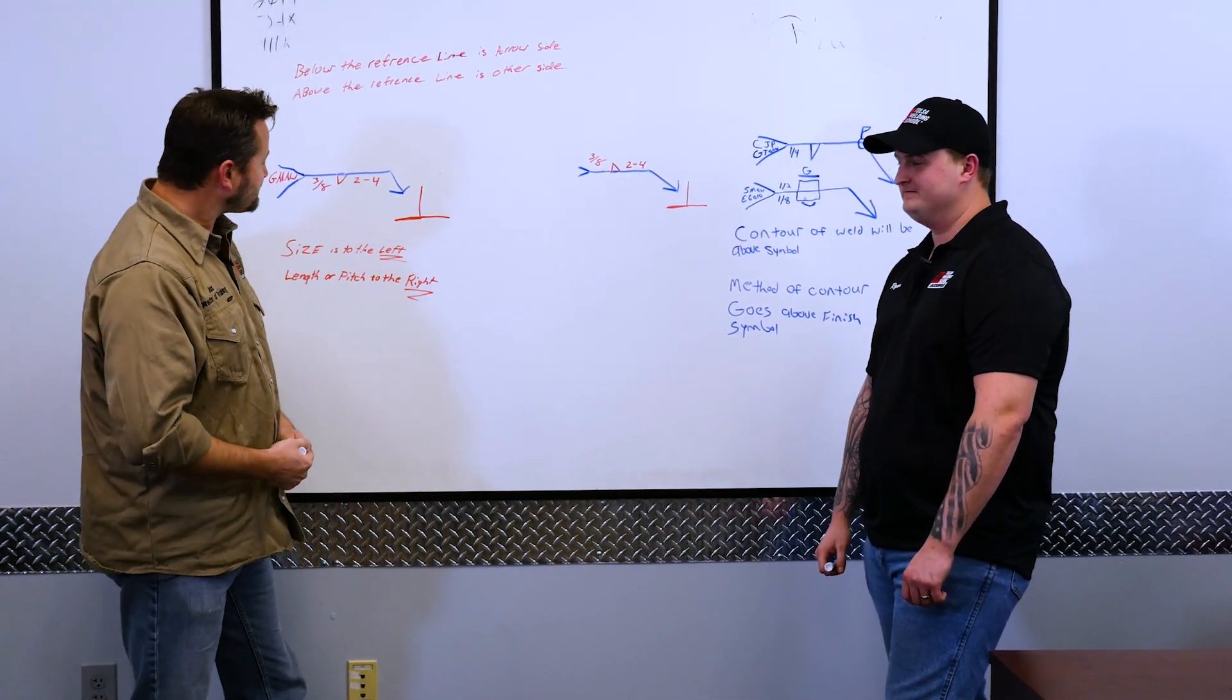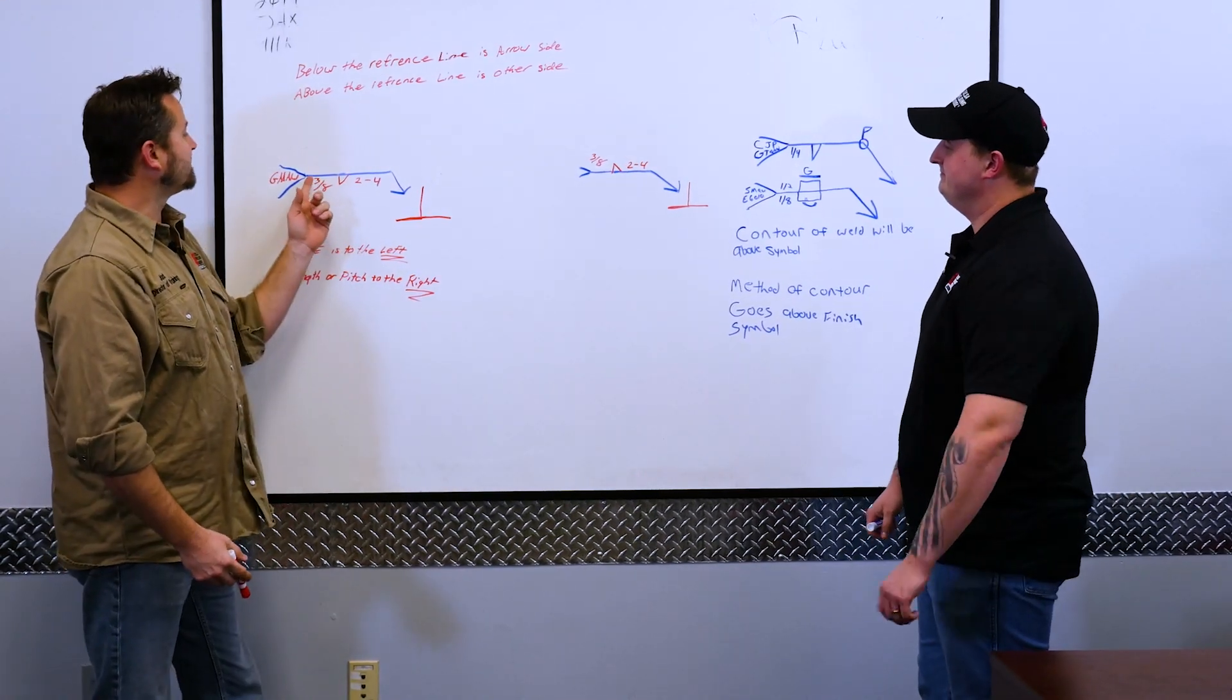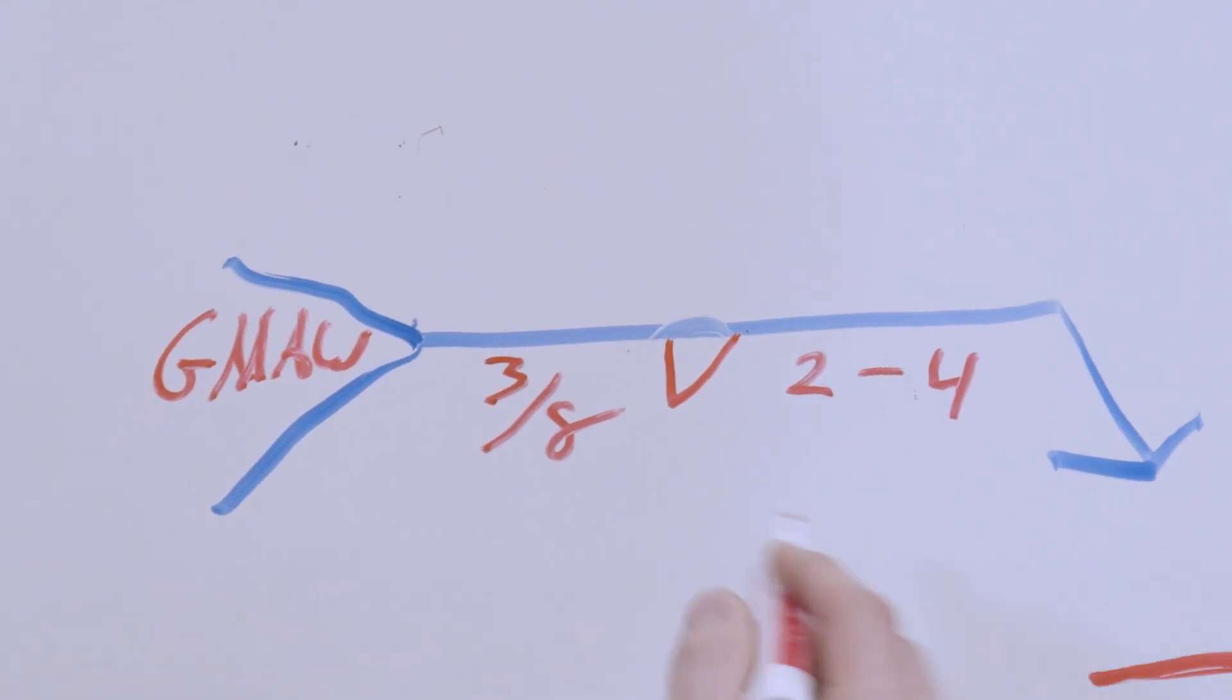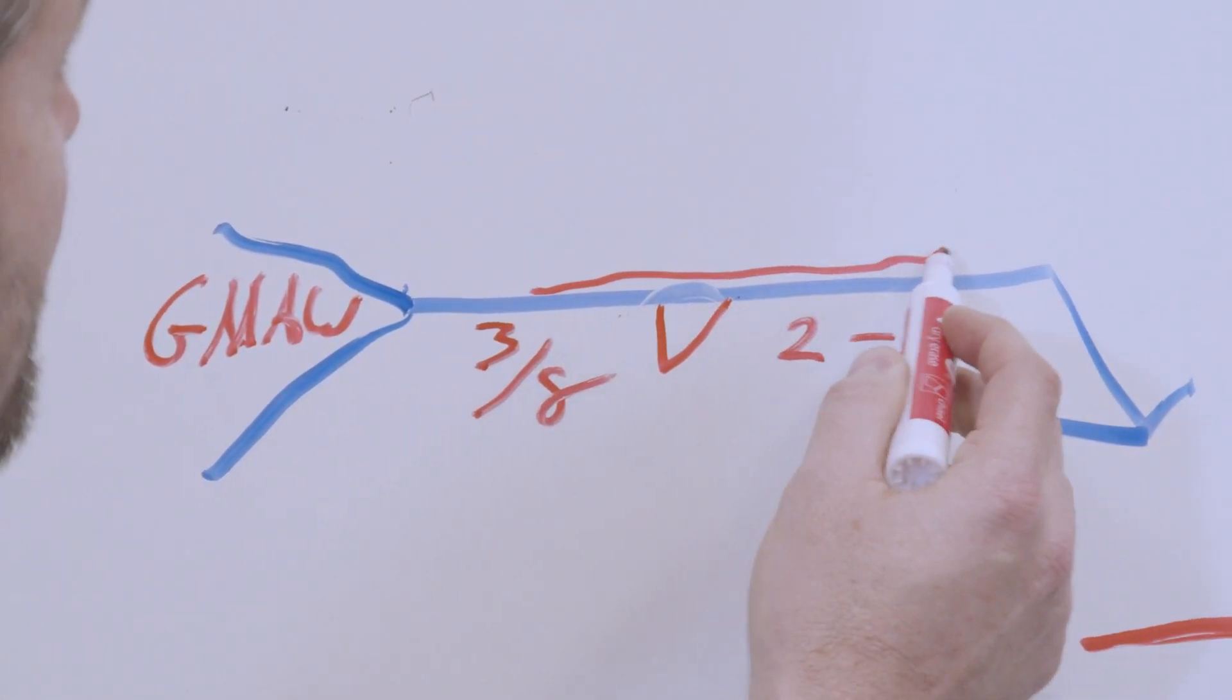So let's go through this here, first you have your reference line, so this blue line right here is called your reference line, I'll point it out, this is called your reference line.